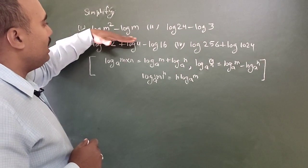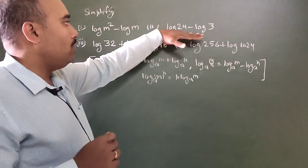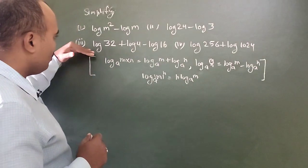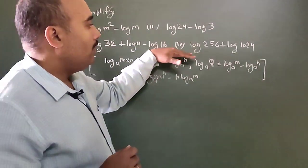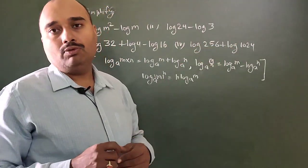First look: log m square minus log m. Second: log 24 minus log 3. Third question: log 32 plus log 4 minus log 16. And here: log 256 plus log 1024.